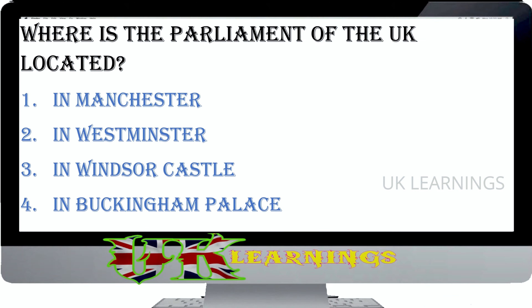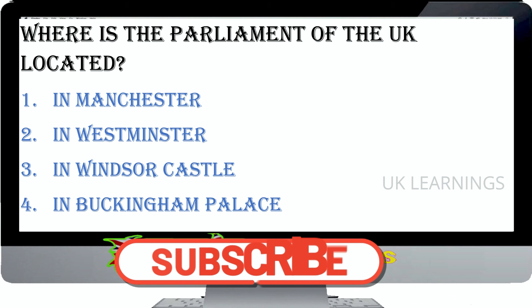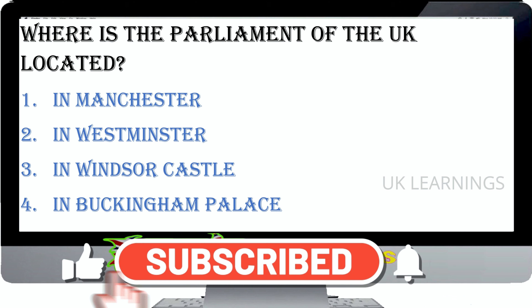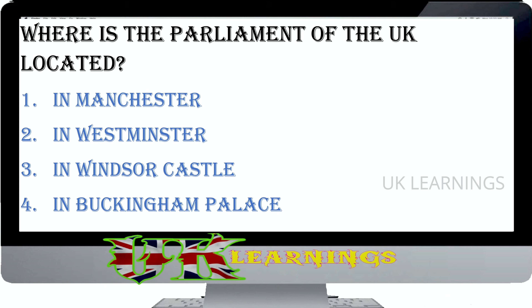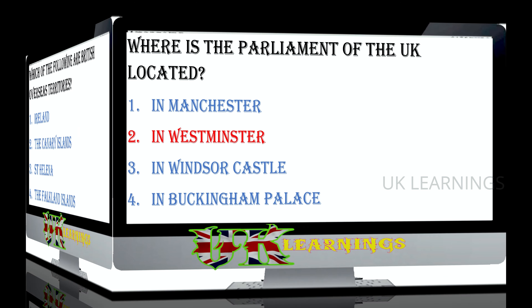Where is the Parliament of the UK located? In Manchester, in Westminster, in Windsor Castle, in Buckingham Palace. The correct answer is in Westminster. The UK is governed by the Parliament sitting in Westminster.